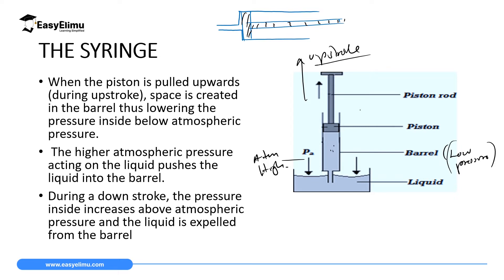Due to the pressure difference — high pressure outside, low pressure inside — the liquid will be forced from where we have high pressure outside to where we have low pressure inside. Now when you want to eject or release this liquid, you do what we call a downstroke. During downstroke you are compressing the liquid inside using an external force, creating high pressure inside the liquid — higher than atmospheric pressure outside.